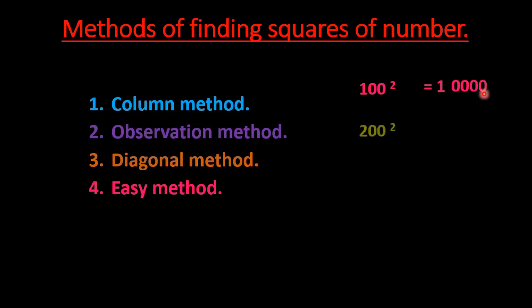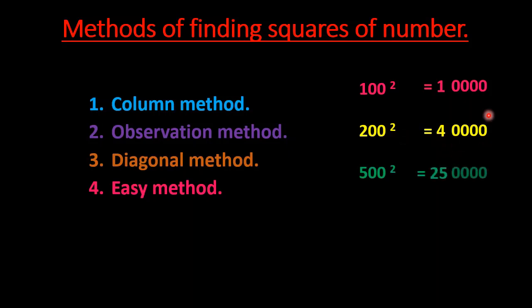Similarly, for 200², the first number is 2, so 2 × 2 = 4, and the remaining two zeros are doubled to four zeros, giving 40000. Likewise, 500² = 250000, 700² = 490000, and 800² = 640000. These are the concepts required while solving question number two using the observation method.